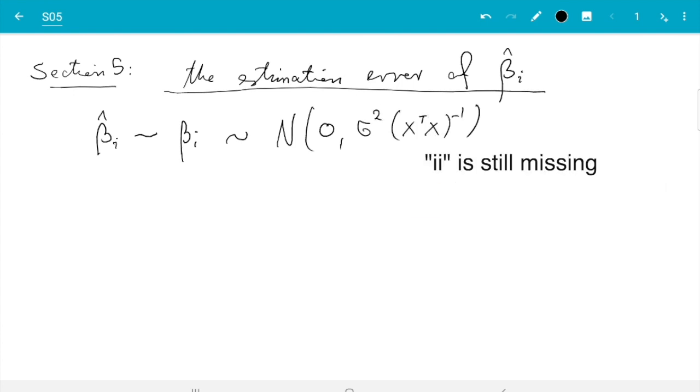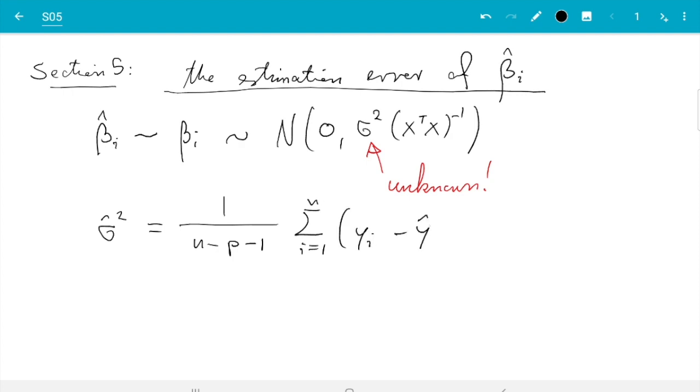But the problem with this is we don't know sigma squared. So this sigma squared here is unknown. And we know also what to do there. We know sigma hat squared equals 1 over n minus p minus 1 sum i from 1 to n of yi minus y hat i squared is an unbiased estimator for sigma squared. So we could attempt to make use of this, and that's exactly what we are going to do.